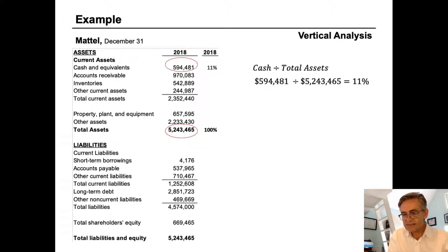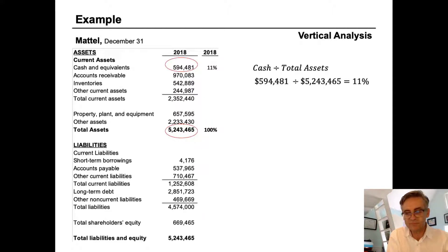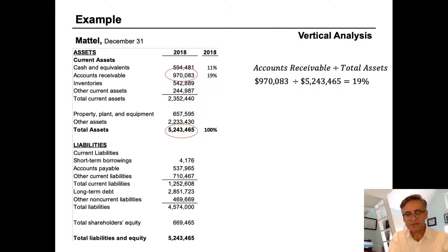The base item is total assets, and we're going to begin at the top of the balance sheet by calculating cash as a percentage of total assets. Cash as a percentage of total assets is $594 million divided by total assets of $5,243,000,000, and that gives us 11%. We do the same thing for accounts receivable — the base item is still total assets, and now we need to calculate the percentage for accounts receivable, expressed as a percent of total assets.